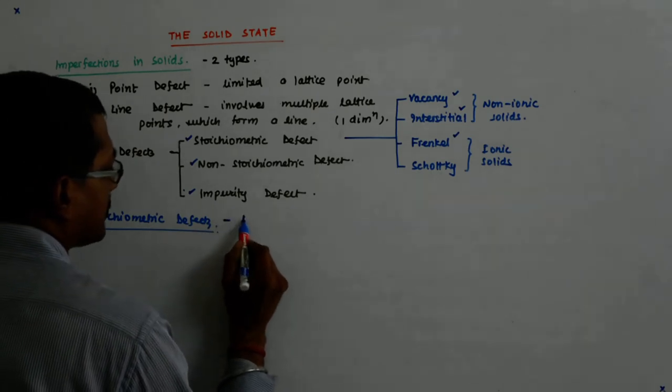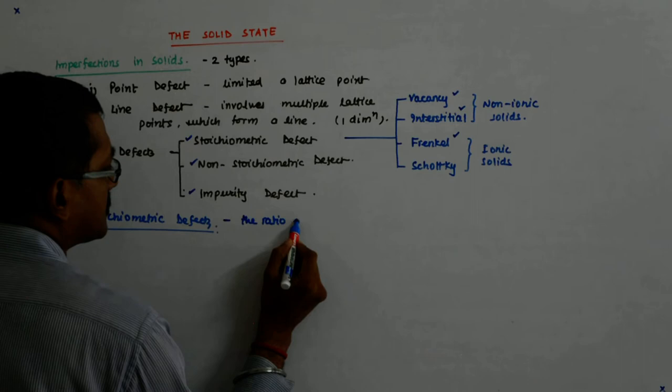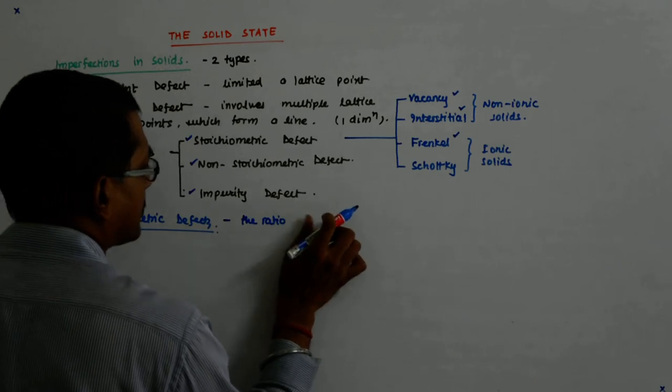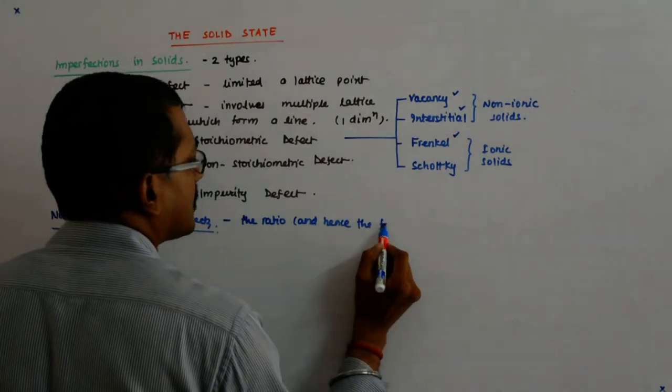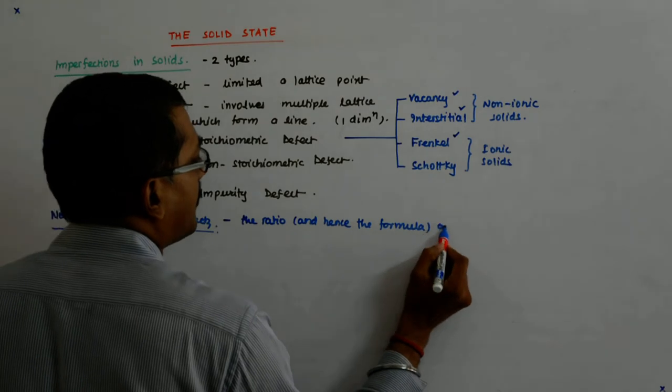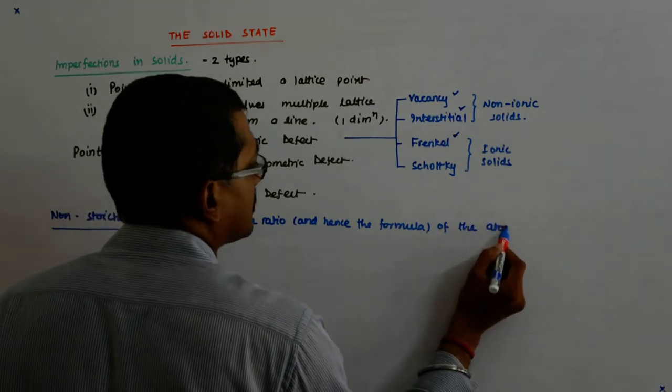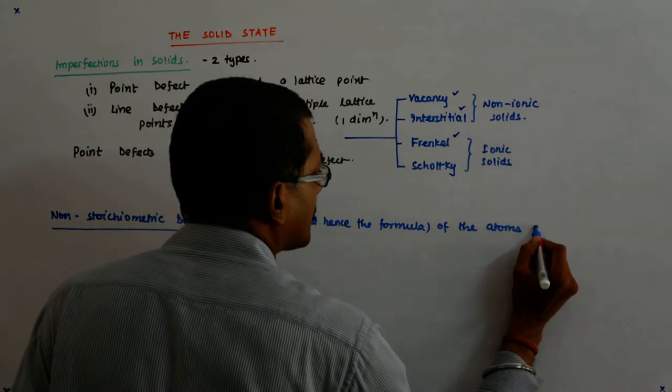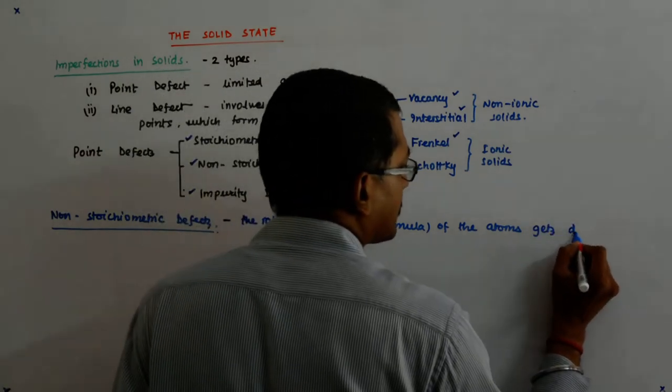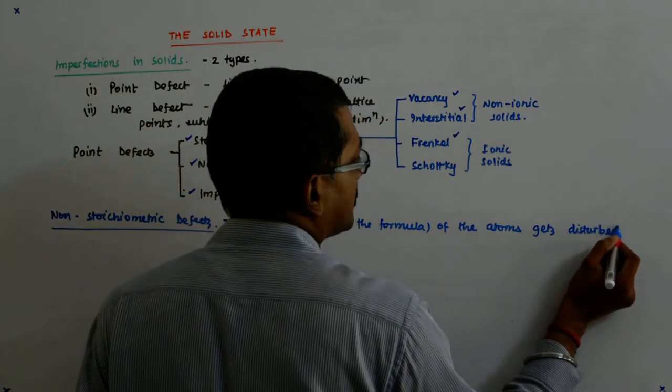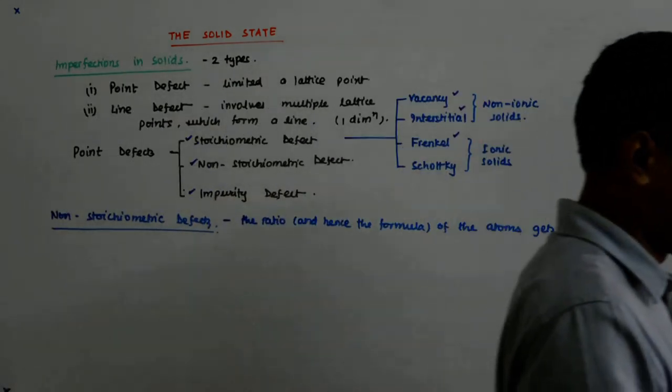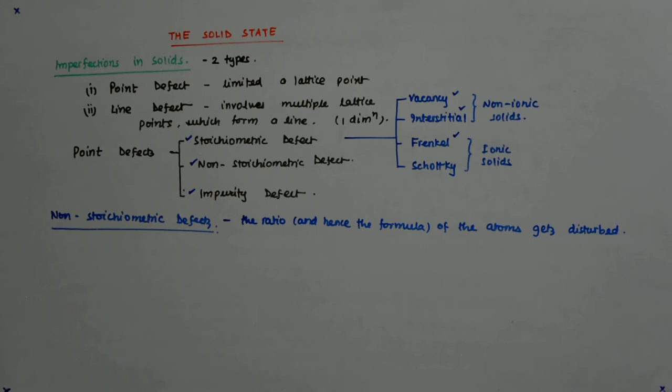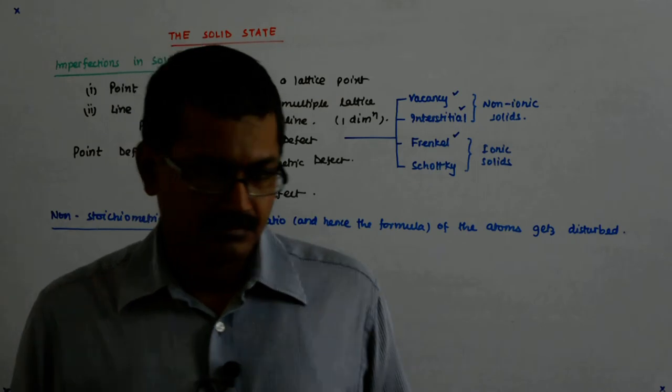That means you will no longer find the same formula valid that we otherwise arrive at by electrical neutrality, by valency. That will get disturbed and that is why they are called the non-stoichiometric defects. The ratio and hence the formula of the atoms gets disturbed.